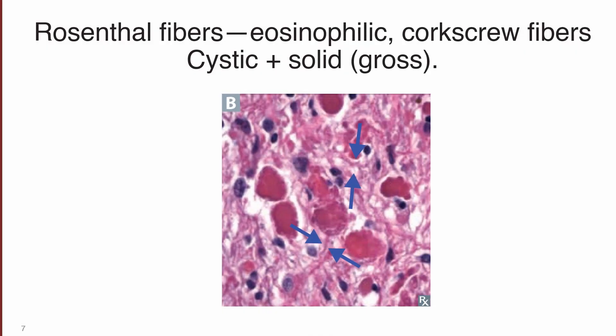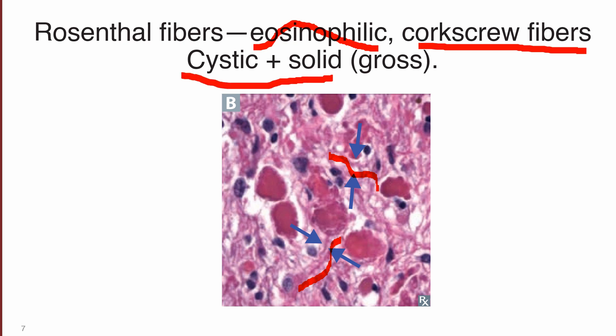On microscopy, pilocytic astrocytoma shows eosinophilic corkscrew fibers (also called Rosenthal fibers). These eosinophilic corkscrew fibers are a characteristic microscopic finding. The tumor also demonstrates the classic cystic and solid intermixed lesion pattern.